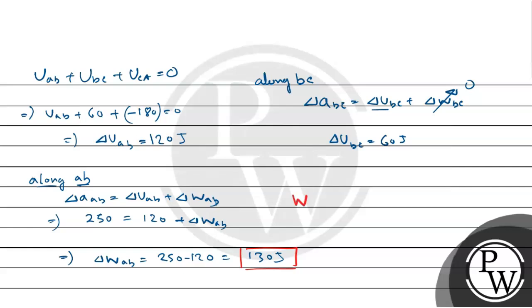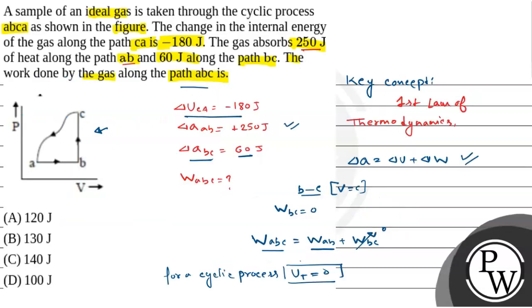So, this is the value of the work done along path AB. Now, work done along ABC is simply work done along AB because work done along BC was 0. So, this is also equals to 130 Joule. That means the work done along the path ABC is 130 Joule and this is our final answer. Our option B is the correct answer. Hope you understand it.